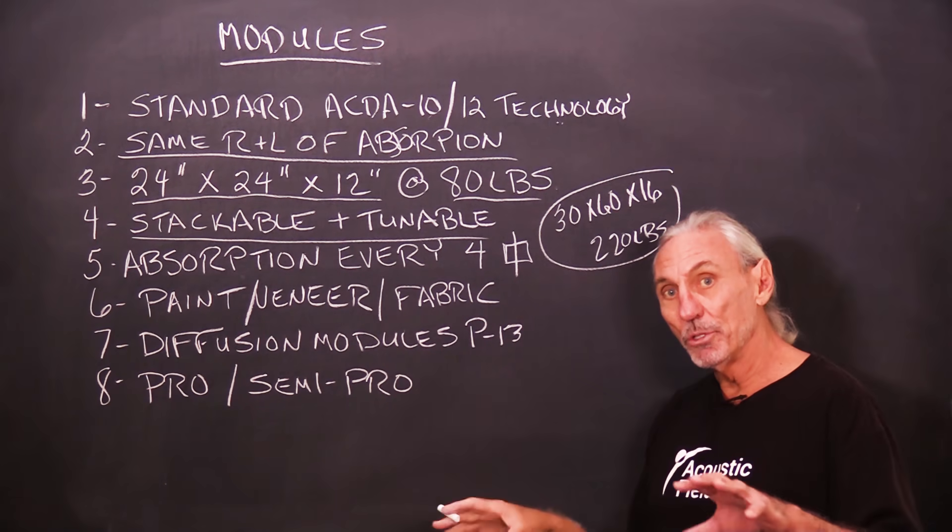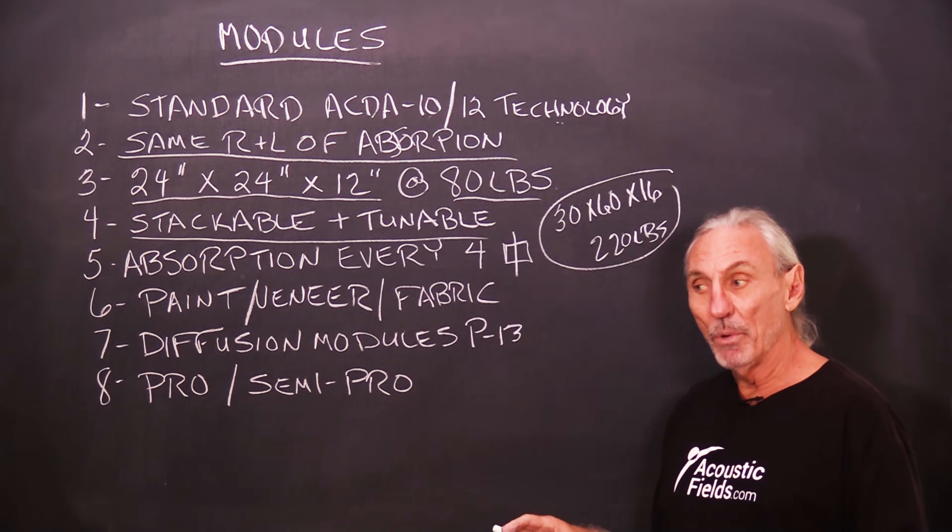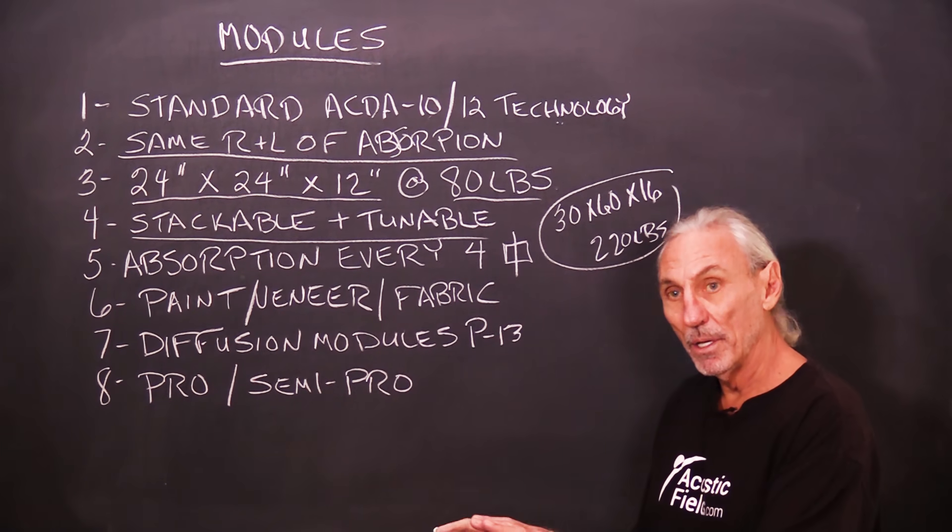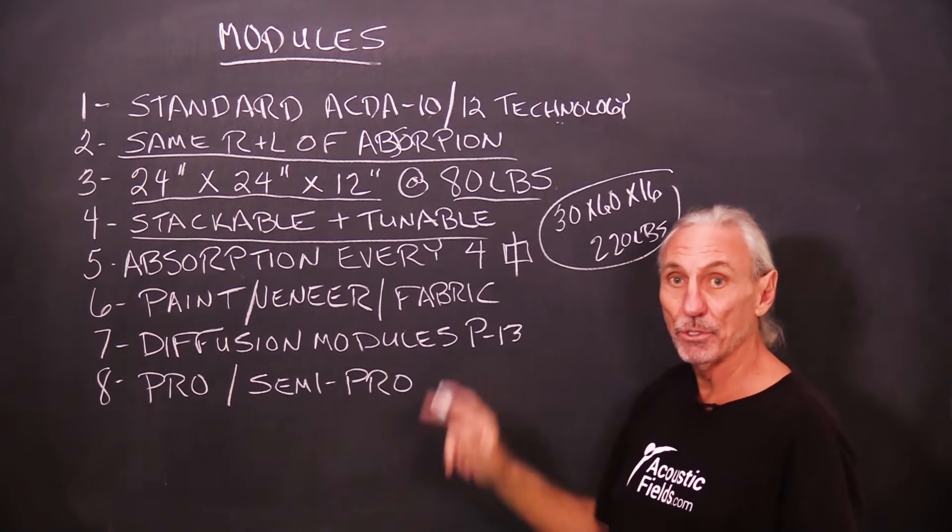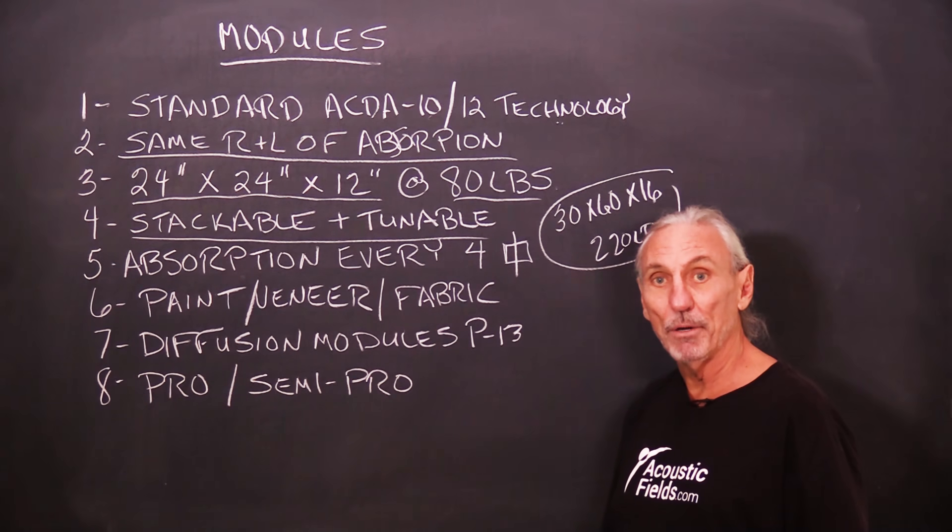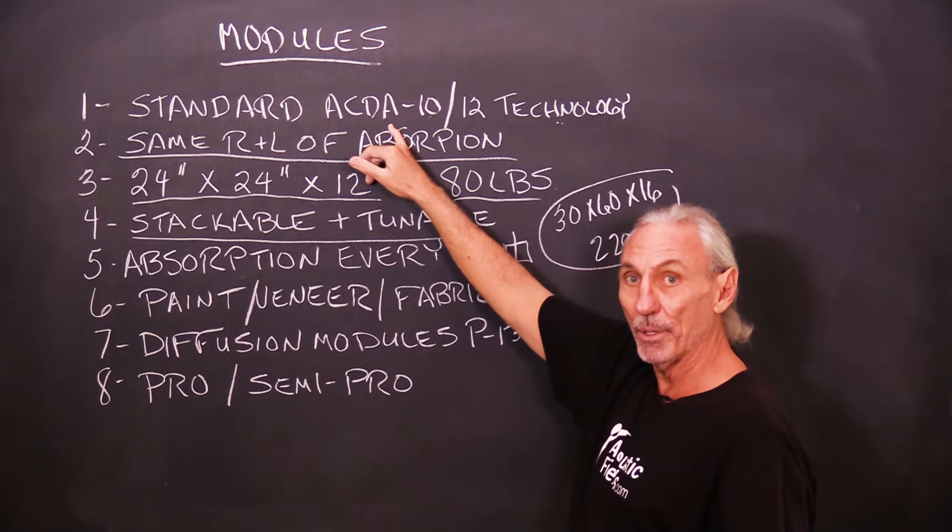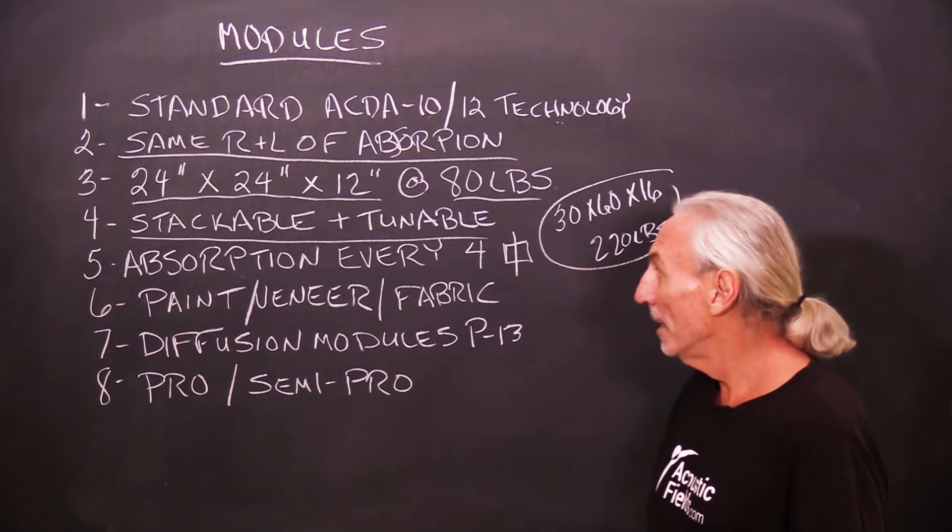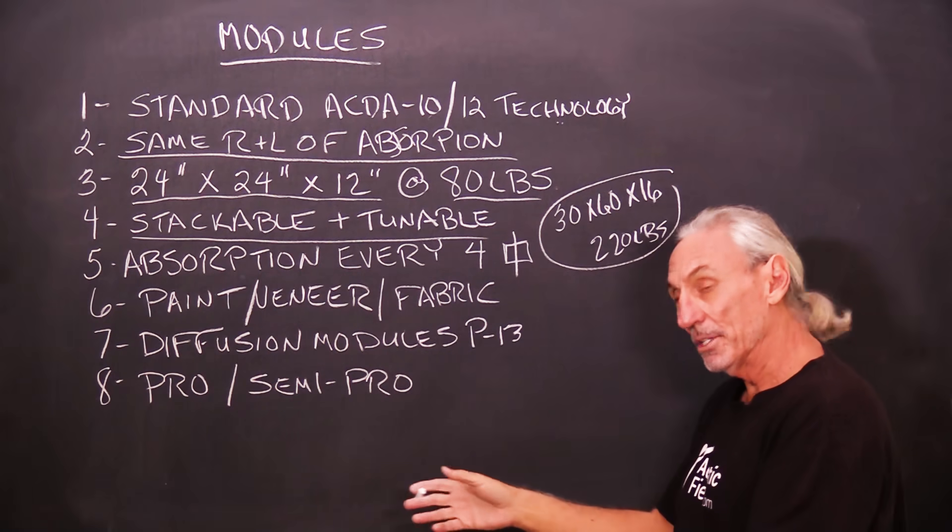So with those two tools, after we analyze the room, we know that the side wall has a 30 to 50 cycle problem big time. So we're going to focus on our ACDA12 technology. Now the front and the rear wall, they may need more broadband absorption with the ACDA10. So now with the smaller module size, we've got control of that.